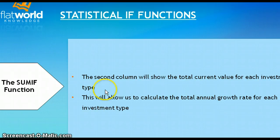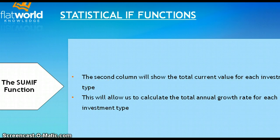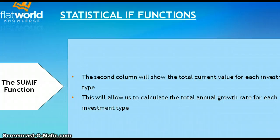We want to calculate investment growth on a particular item. We give it a function that says: if the criteria meets this argument, then sum it; if not, don't sum it. This concludes our Chapter 3 lecture. I suggest reading the chapter with Excel open so you can practice those skills as we go over them. Ask any questions in the Q&A section of the discussion board, and we will be doing a lot of practice to go over these skills and determine if there are any you use in your workplace. Thank you.